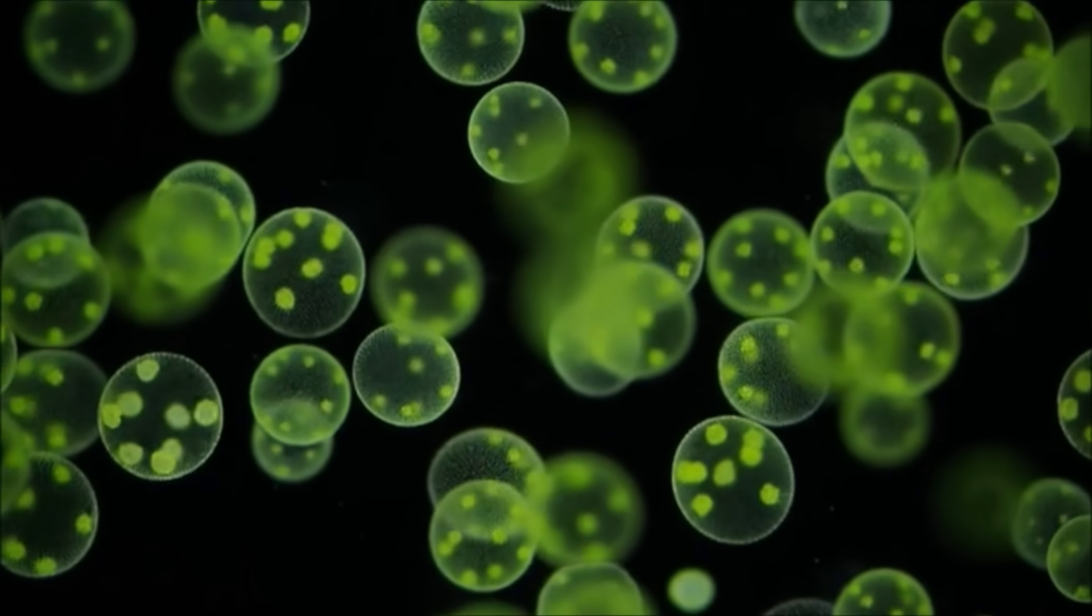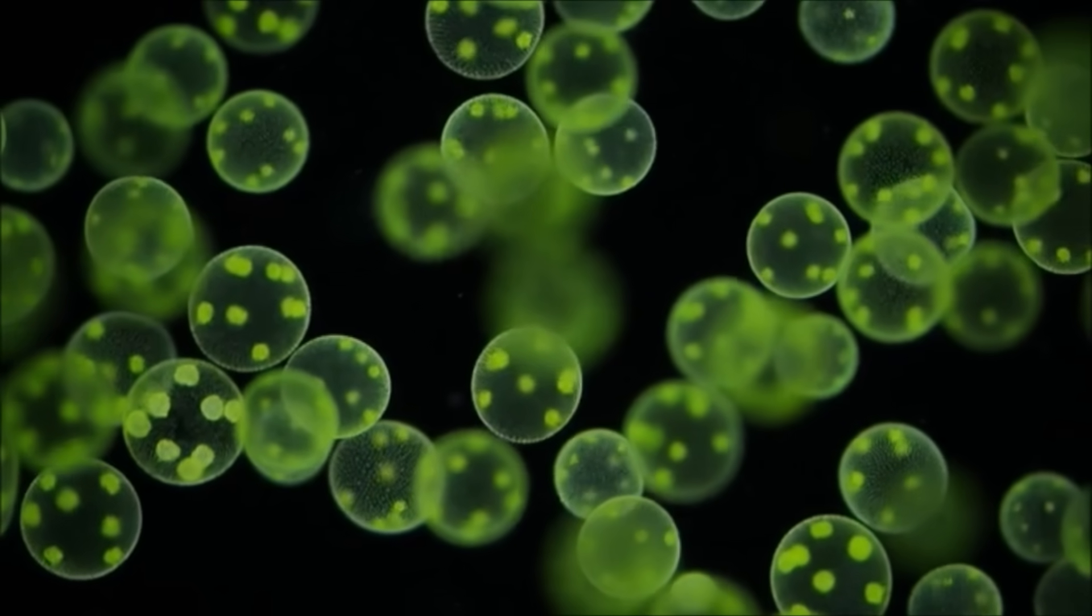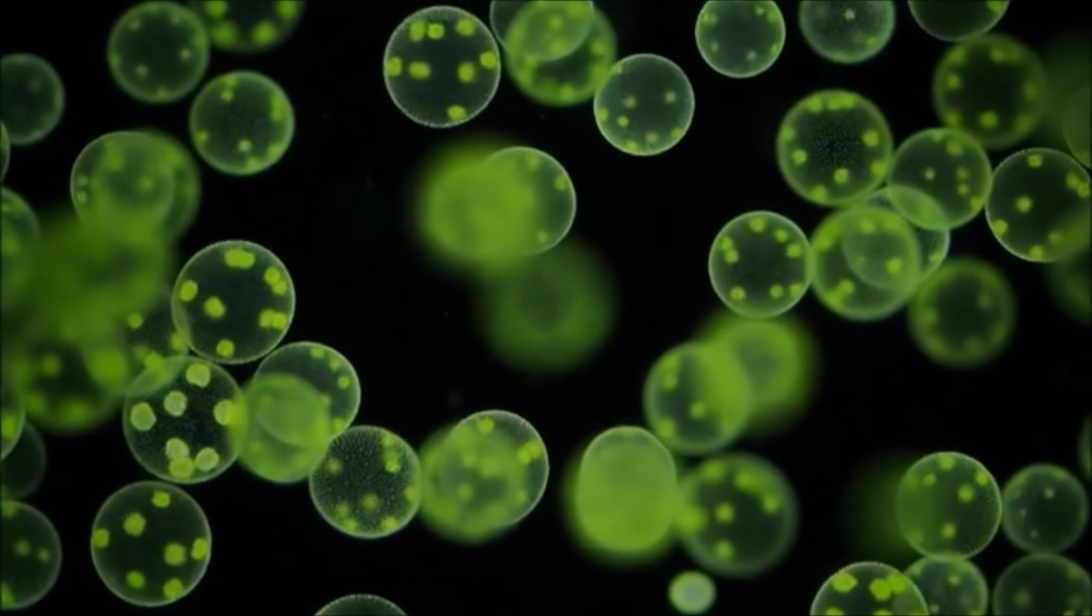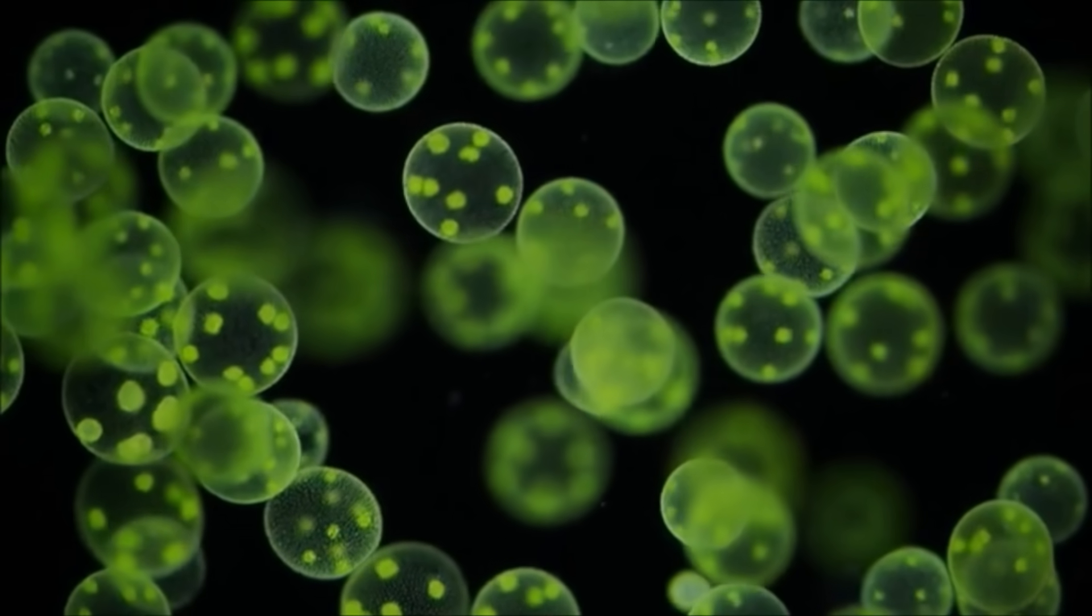In photosynthesis, chlorophyll absorbs energy from sunlight and creates sugar to feed the plant. Simple plant cells may have only one or two chloroplasts in them, but more complex ones may have hundreds.